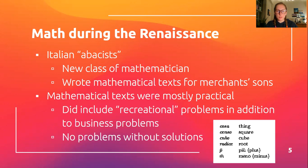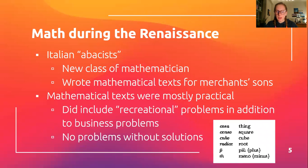Mathematical texts were mostly practical — they mainly stuck to teaching young merchants the mathematical skills they would actually need in carrying out daily transactions. Somewhat similar to our textbooks today, problems and their solutions were described in detail with every step carefully explained. Recreational problems that were included covered a variety of kinds: geometry, elementary number theory, calendar, and astrology. They didn't really focus on problems without solutions because those wouldn't have a clear practical use for merchants.